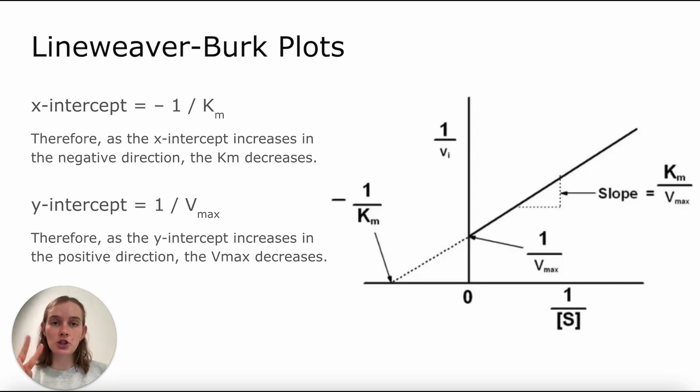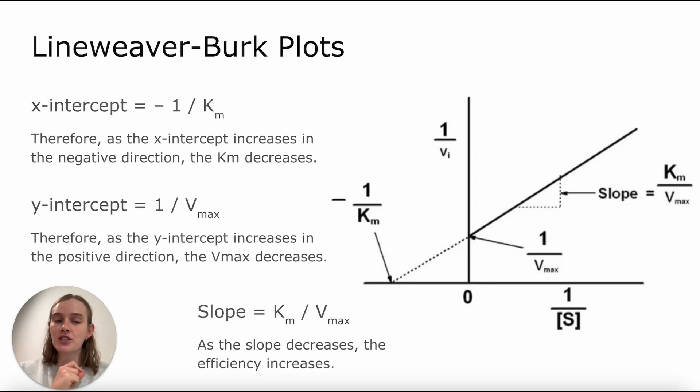Using these two parameters together, we can find the slope, which is Km over Vmax, and that essentially means that as the slope decreases, efficiency increases. And we can make that assumption because we see here Km is on the top of our division, while when we were talking about catalytic efficiency, that Km was on the bottom. So that creates that inverse relationship between the two.